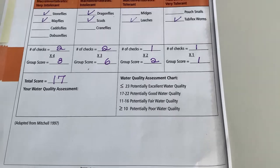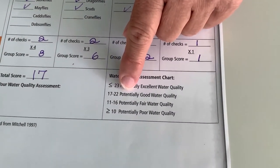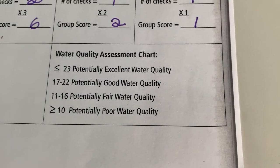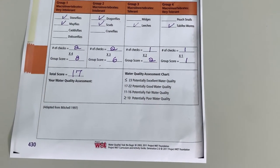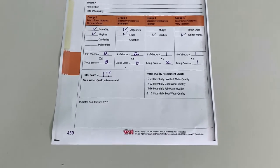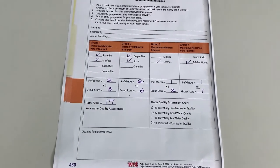Then we look at how we interpret that data. So if we look here, 17 is in the potentially good water quality. So I suspect all of you doing this are going to have different ratings. It'll be fun to compare what you found with your classmates.